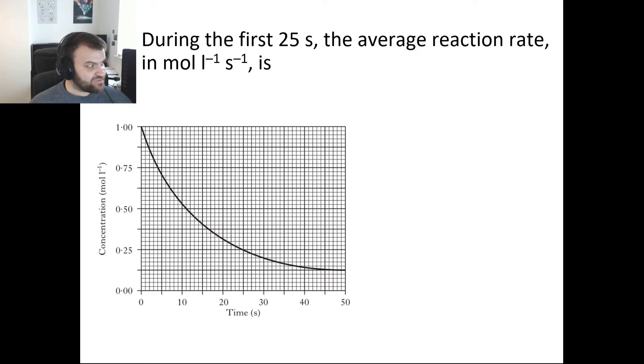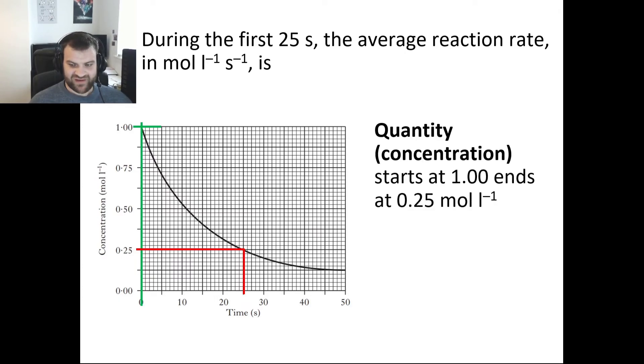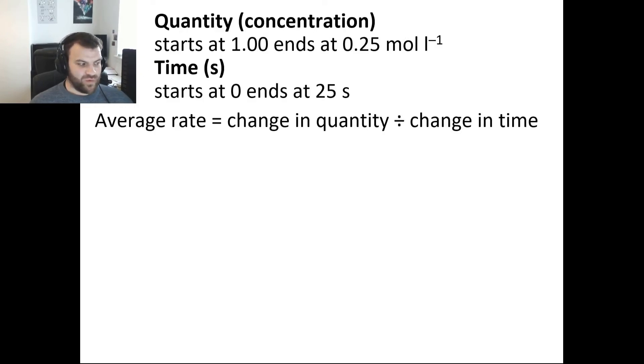During the first 25 seconds, let's look at those points. At the start at zero seconds we are up at one mole per liter. After 25 seconds we are at 0.25 moles per liter. Our quantity starts at one, ends at 0.25 moles per liter, and our time starts at zero and ends at 25 seconds. We can use that information into our changing quantity over changing time. Our quantity has went from one to 0.25, which is a change of 0.75 moles per liter, and it's taking 25 seconds for that to happen. So 0.75 moles per liter divided by 25 seconds gives us a rate of 0.03 moles per liter per second.